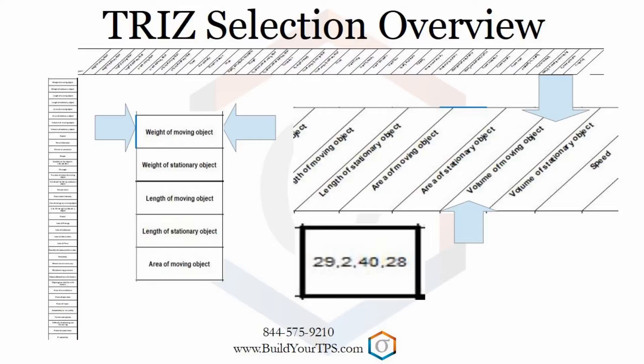You may want to increase the weight and not increase the volume, or keep the weight the same and decrease the volume. For example, you may be attempting to build a football helmet designed to minimize concussions, but the contradiction is that the new design will increase the helmet size. Another example could be that you want a missile to fire a greater distance, but it must fit into an existing launcher.